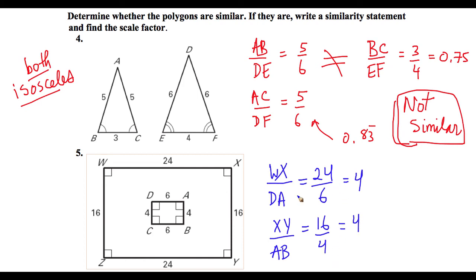So we know that all of the proportions will match, that the two horizontal lengths are the same as the two vertical lengths. So we can say that yes, they are similar. We can say quadrilateral WXYZ is similar to quadrilateral DABC.